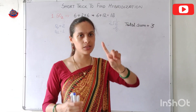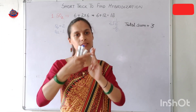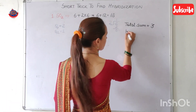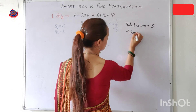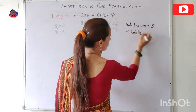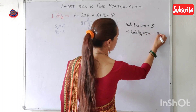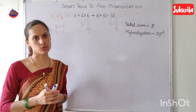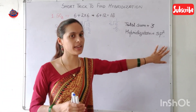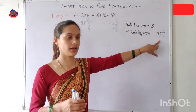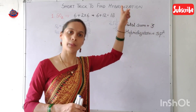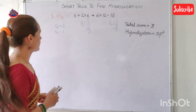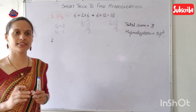The total sum is 3, so the hybridization is sp². Because the sum is 3, that means 1s orbital and 2p orbitals. So hybridization is sp². You can verify this with the basic/original method as well.